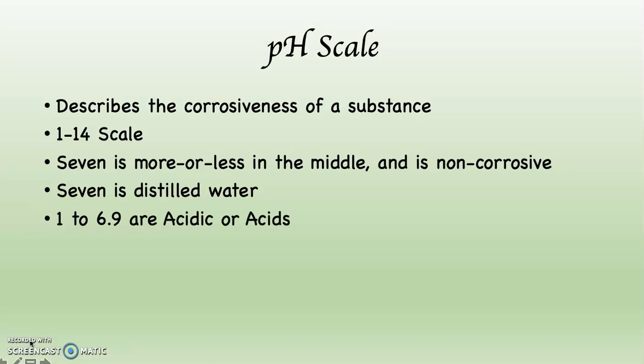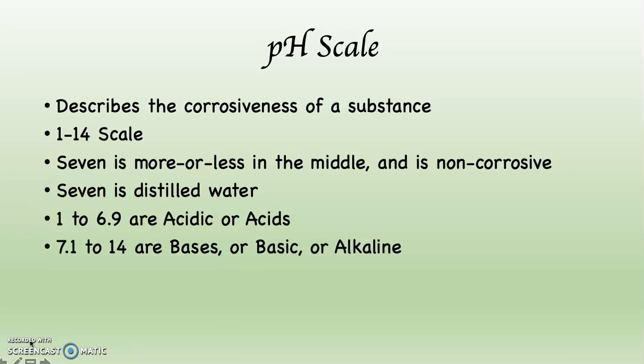When you go from 1 to 6.9, substances are said to be acidic, or acids. And when you go from 7.1 to 14, substances are referred to as bases, or basic, or alkaline. Both directions — in the acidic and in the basic direction — substances become increasingly corrosive.